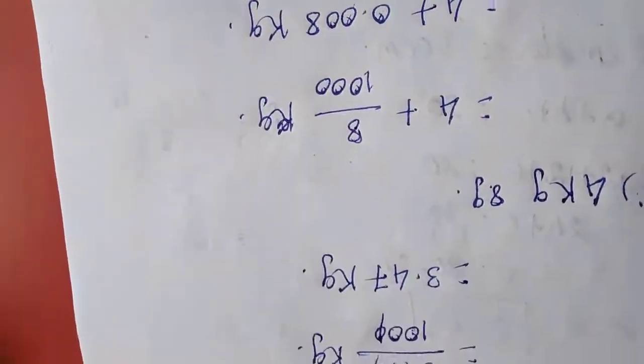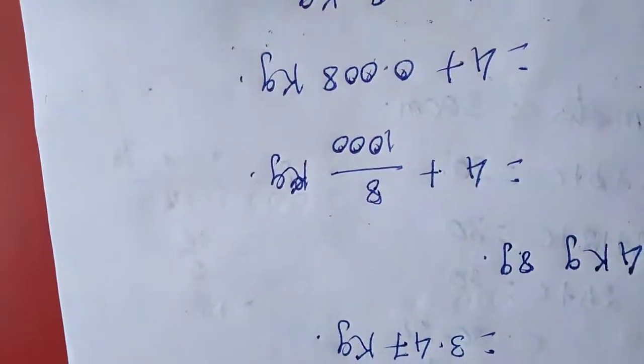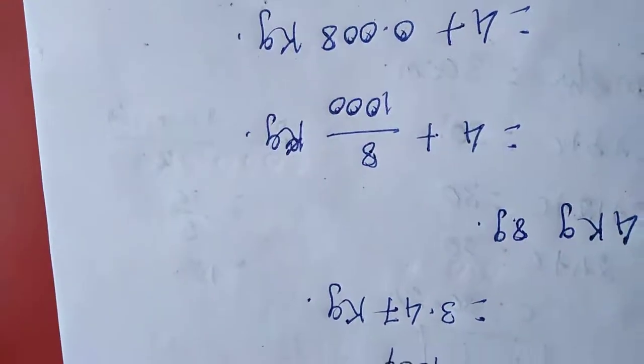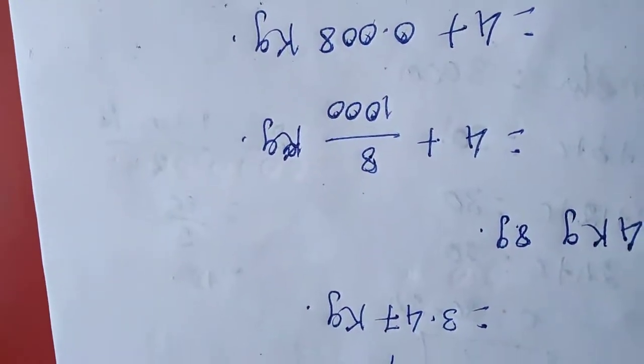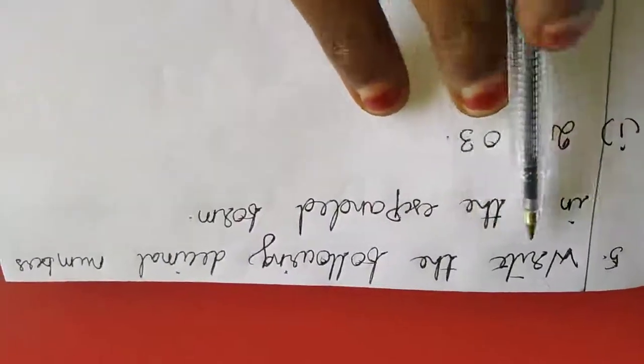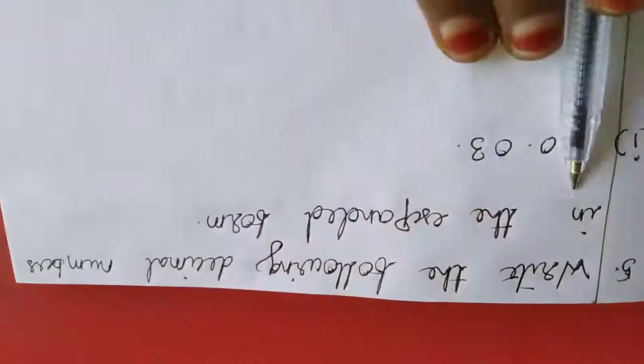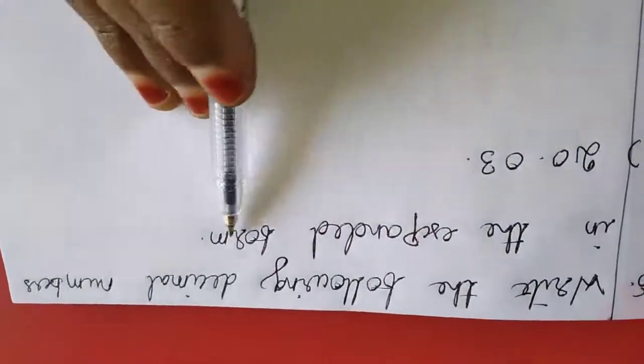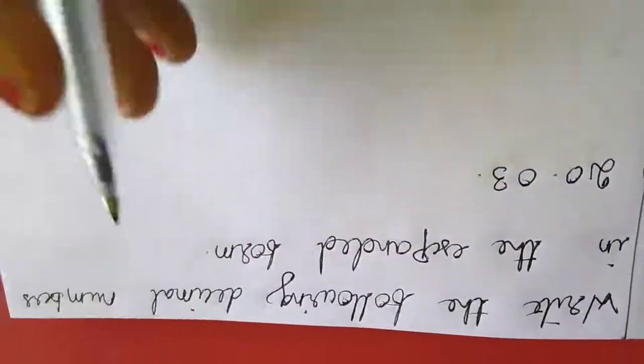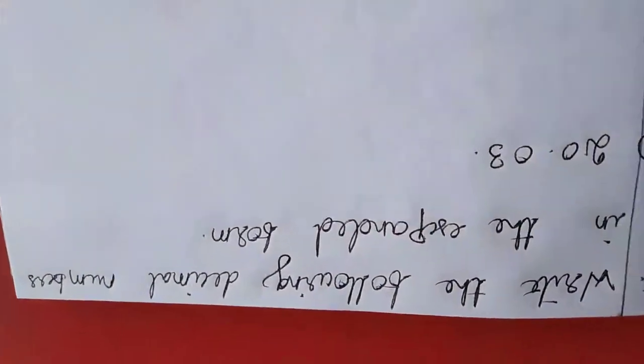That's all dears. The 4th sum is over. Now I am going to move to the 5th sum. The 5th sum is: write the following decimal numbers in expanded form. We are going to write the expanded form.